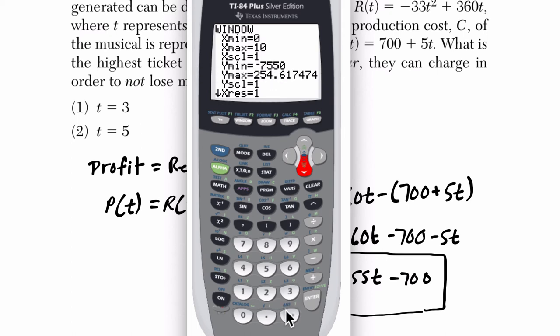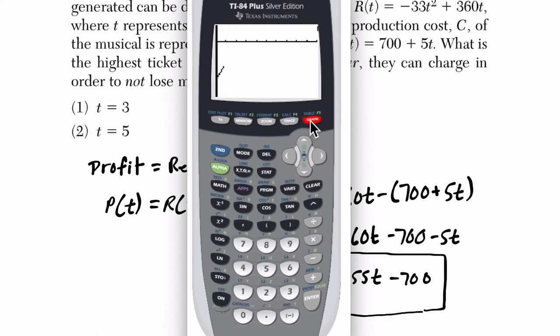We don't really want to consider negatives there. So I'm going to go negative 100. And then the Y max is 254. So to go to at least 254, I'm going to go to 300. And then I'll press graph and see how my picture looks.